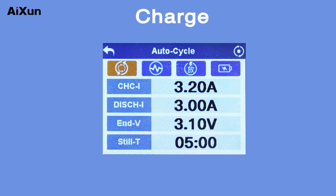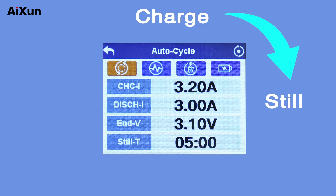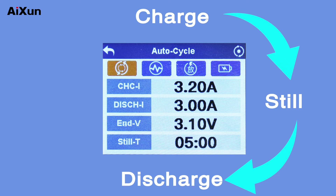The charging state of auto cycle starts by default. The charging current is the one set in the auto cycle interface. When the battery is fully charged, it switches to the rest state. The rest time is the one set in the auto cycle interface. When the rest time is reached, the battery will switch to the discharging state.